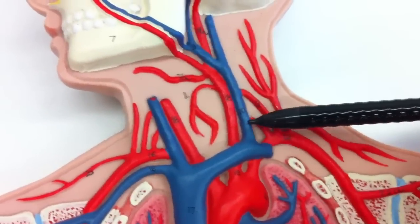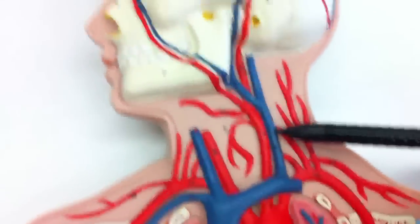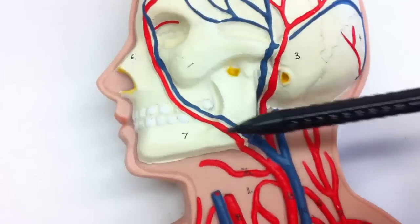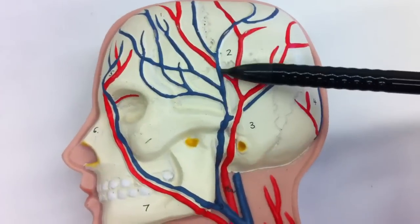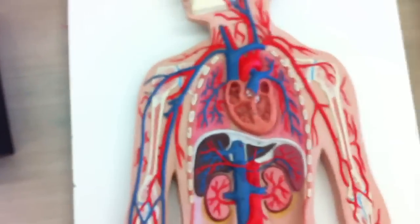Over here we have the external jugular. We have the facial vein right here, and then the external temporal vein as well. And that should do it.